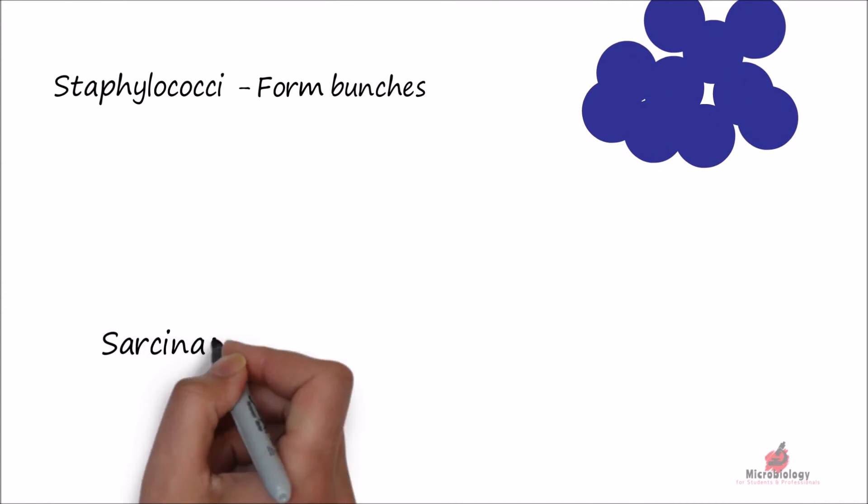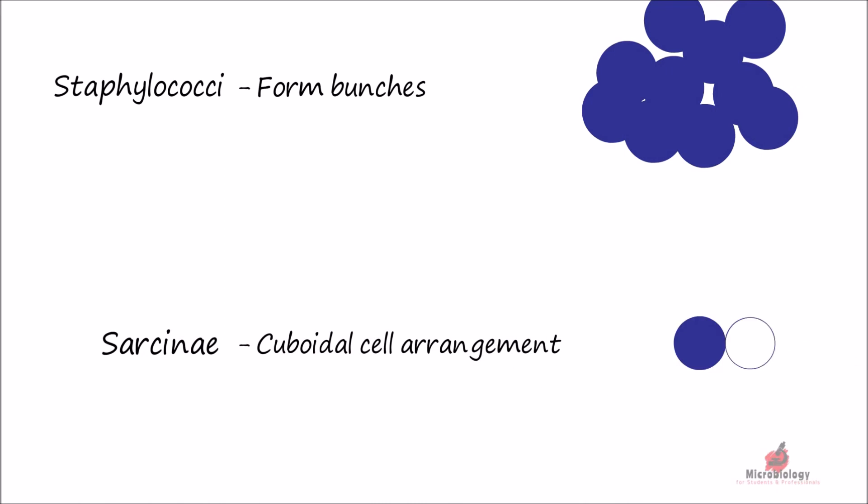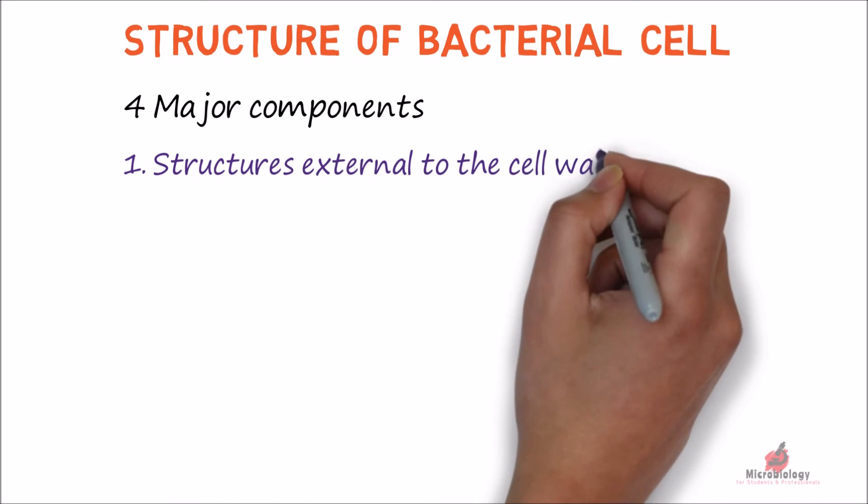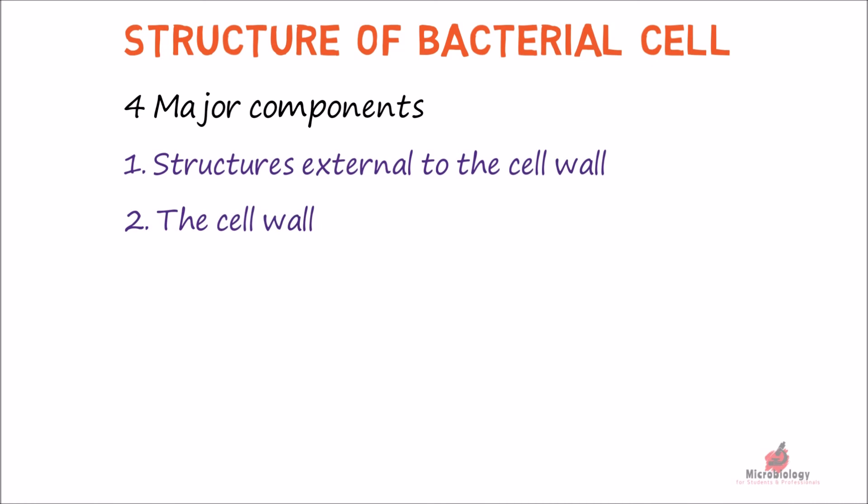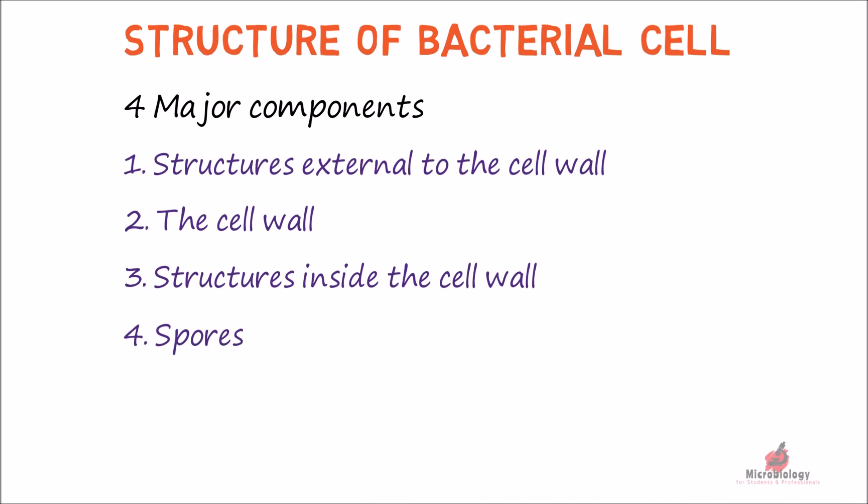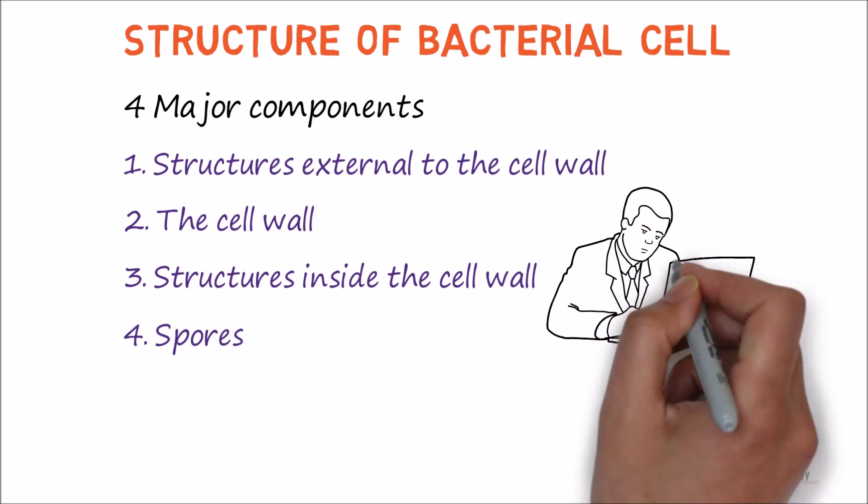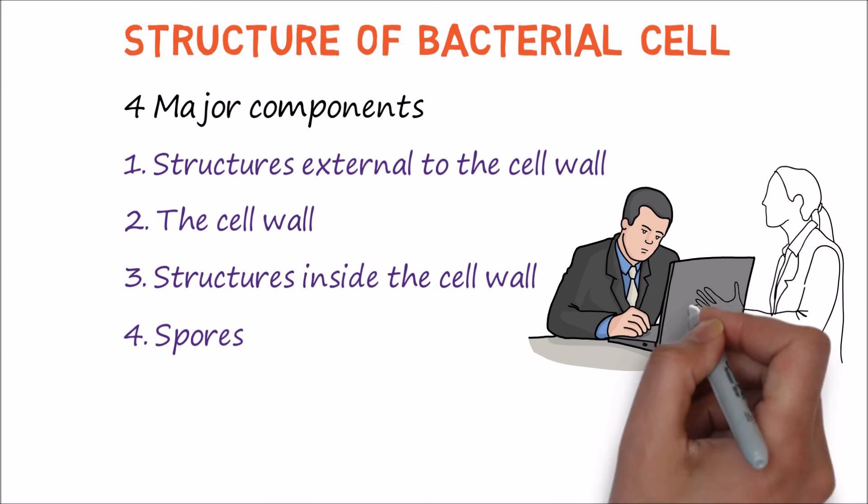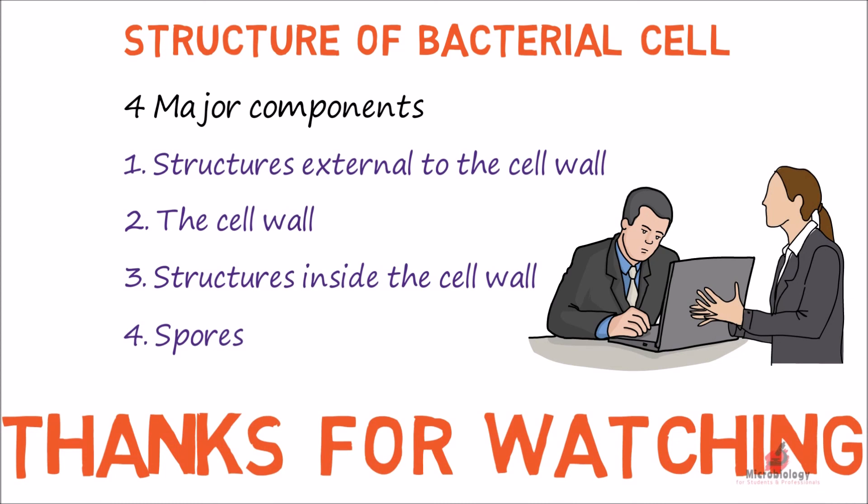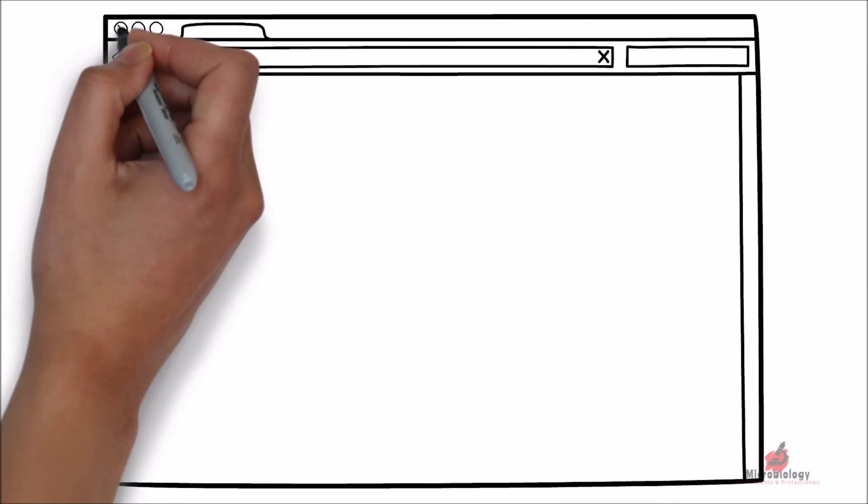Sarceny cells divide in three planes and form a cuboidal cell arrangement. The structure of bacterial cell includes four major components: structures external to the cell wall, the cell wall, structures inside the cell wall, and spores. We will discuss about each of these components in detail in the coming videos.